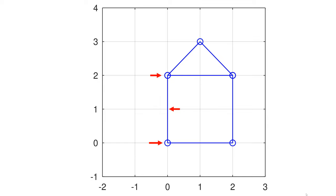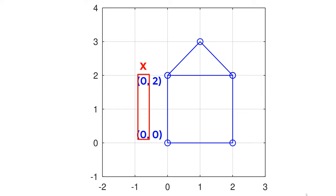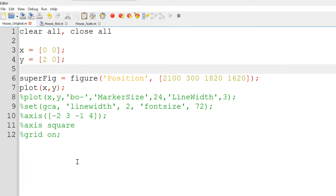To draw the house image, you can start with two dots such as (0,2) and (0,0). The way the plot function works, you need to provide the same size of x and y coordinates as a vector. Since I have two points, I need 1-by-2 vectors for each. For x coordinates I need [0,0], and for y coordinates I need [2,0].